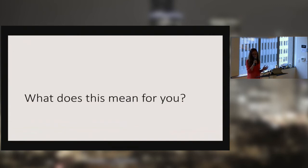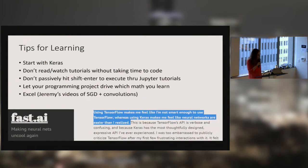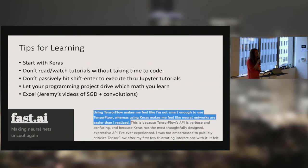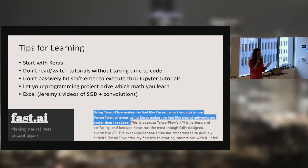So what does all this mean for you? My very opinionated recommendation is to start with Keras. Keras is a Python library that sits on top of either Theano or TensorFlow. The abstractions in Keras are so well mapped to the abstractions of neural networks that I think it makes it a lot easier to learn both. I wrote a blog post saying using TensorFlow makes me feel like I'm not smart enough to use TensorFlow, whereas using Keras makes me feel like neural networks are easier than I realized — and a lot of people agreed. We use Theano and Keras in part one of the course, and TensorFlow and PyTorch in part two, but I still really recommend starting with Keras.